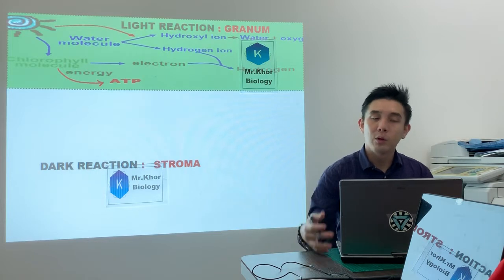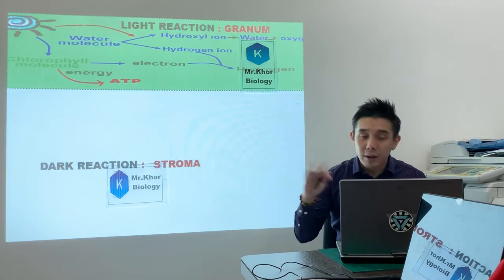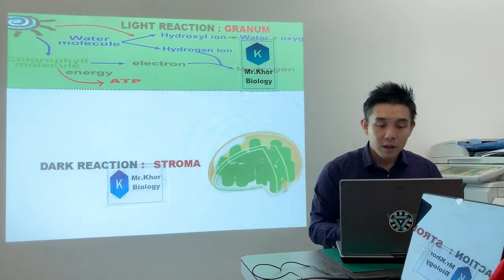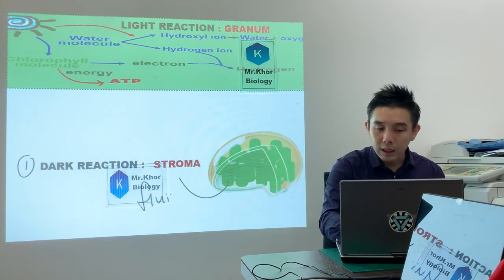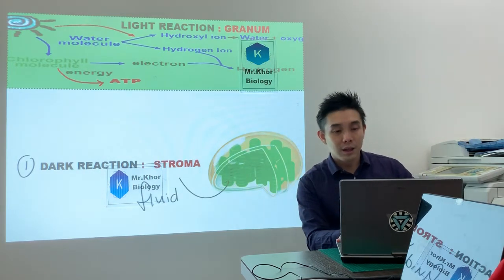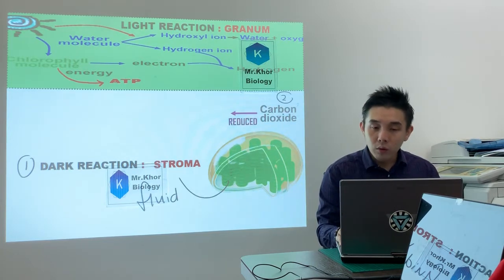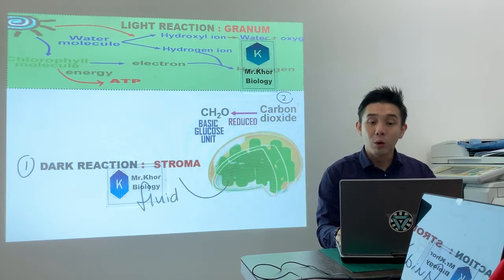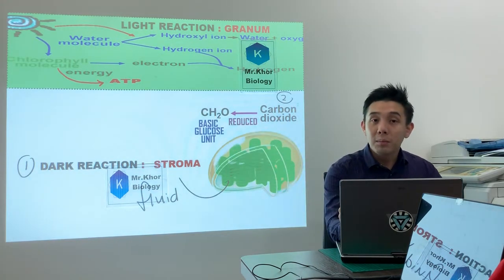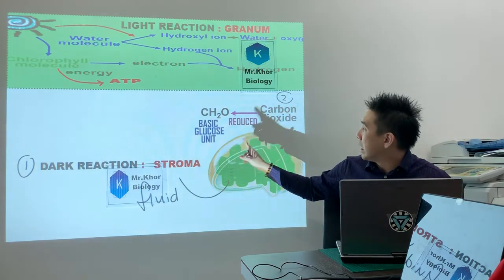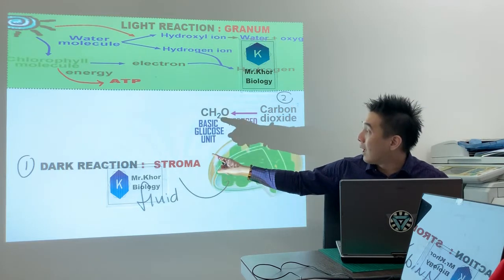Good news for you - if you know light reaction, dark reaction is half the process only, very simple. First point: dark reaction occurs in the stroma. Stroma is the fluid in chloroplast. Second point: carbon dioxide will be reduced to basic glucose unit. Carbon dioxide is reduced to basic glucose unit.